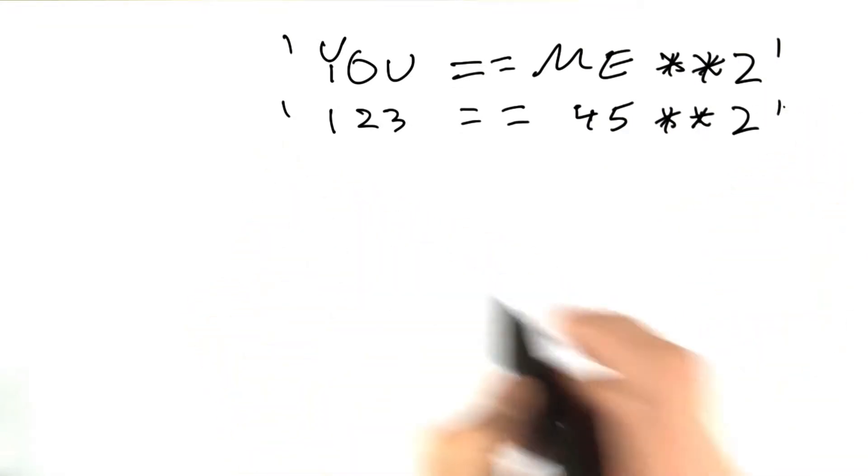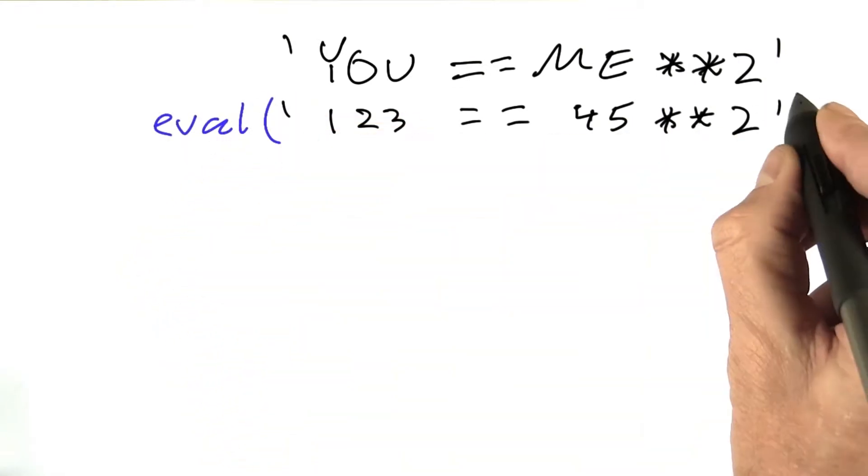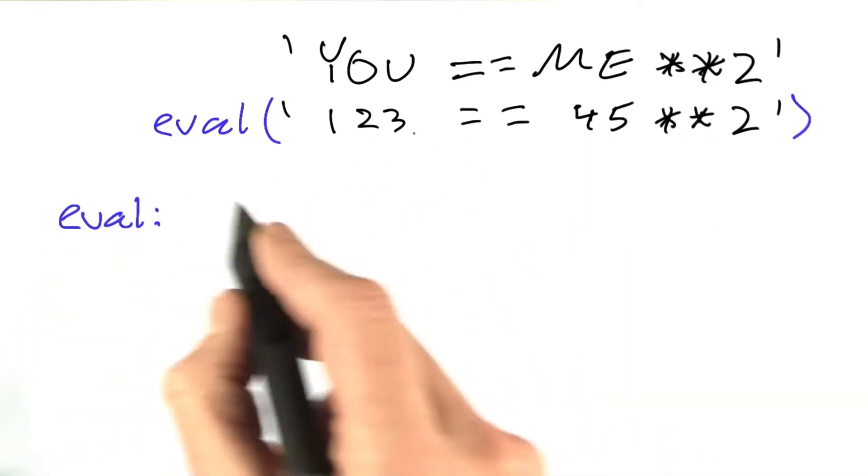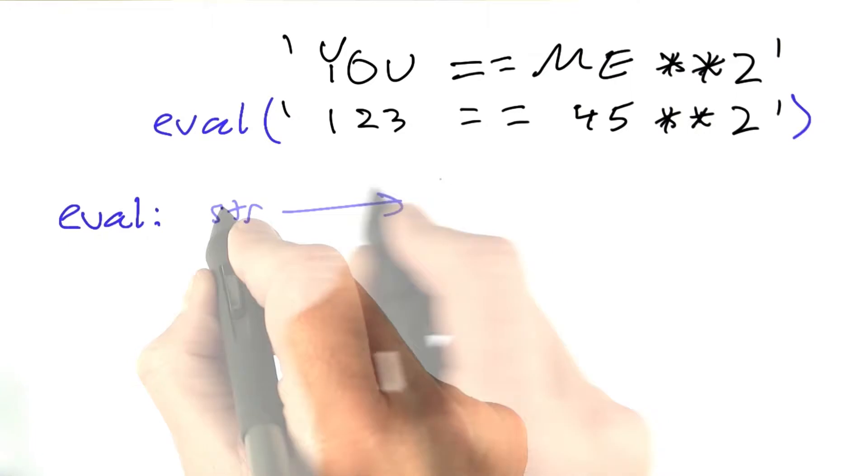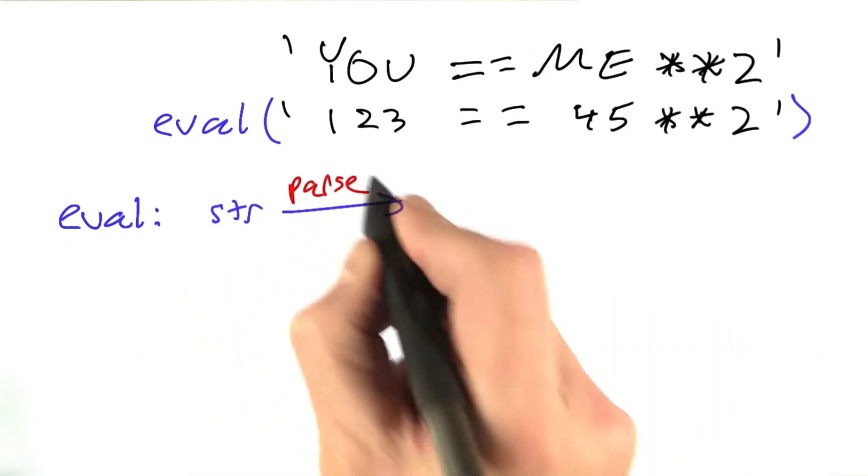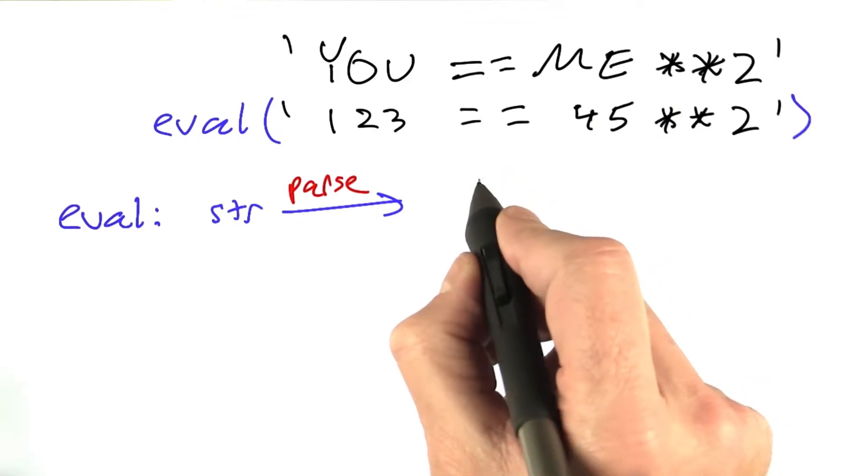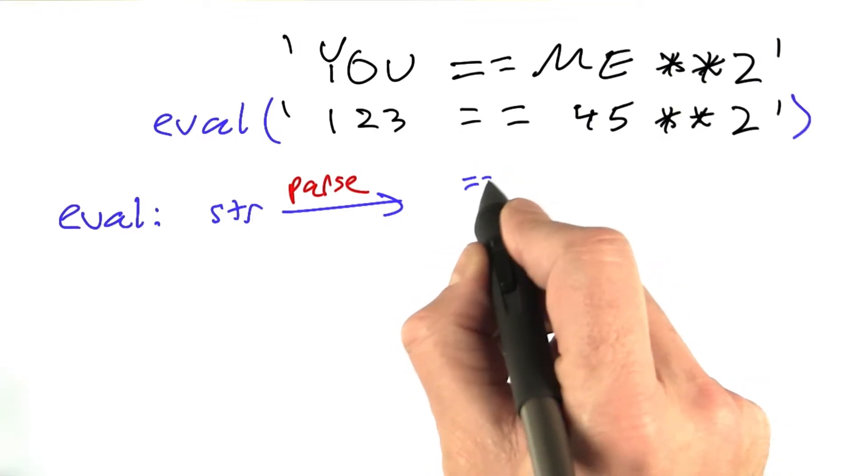Now, what happens when we call eval on this string? What eval has to do is it takes its input, which is a string, and then it has a process of parsing that string into a parse tree. And the parse tree would say something like this is a comparison,